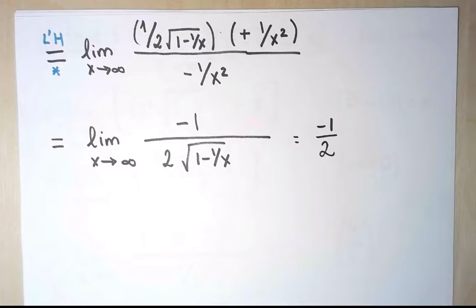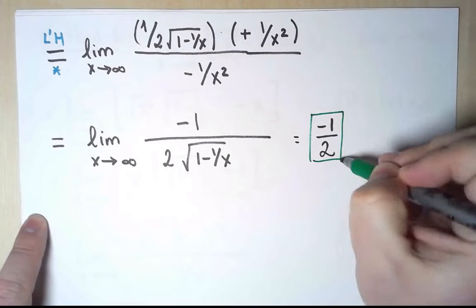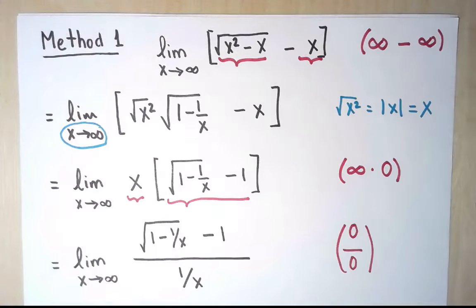So this limit exists, and is equal to a number. So the use of L'Hôpital was legal. The previous limit is also equal to minus 1 over 2. And the original limit is equal to minus 1 over 2.